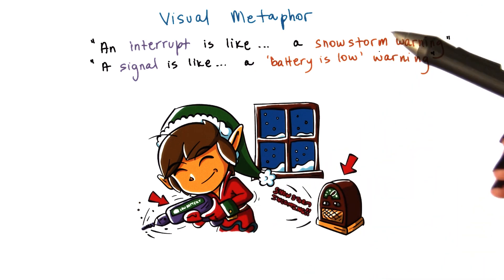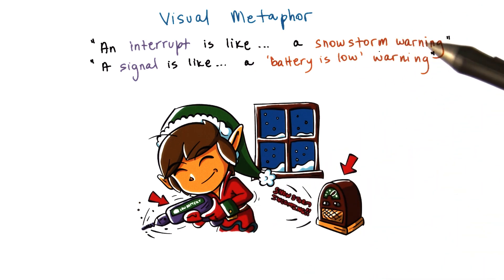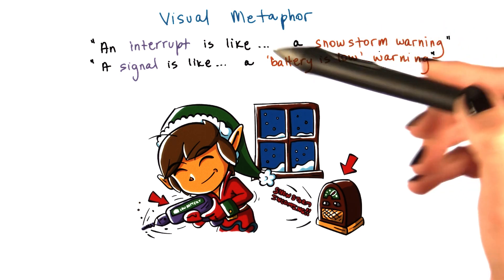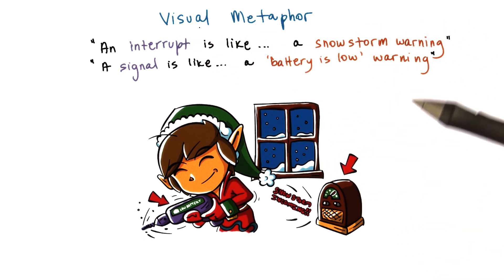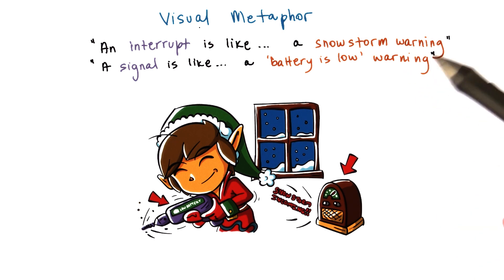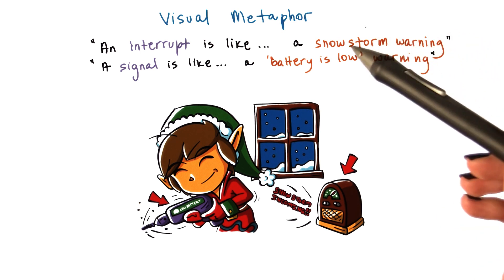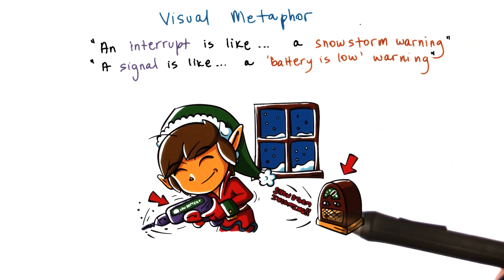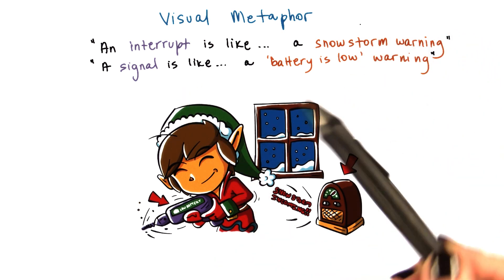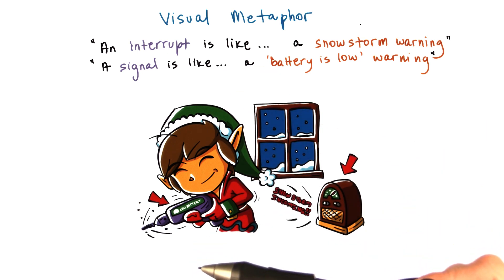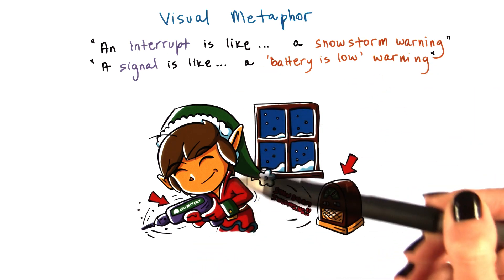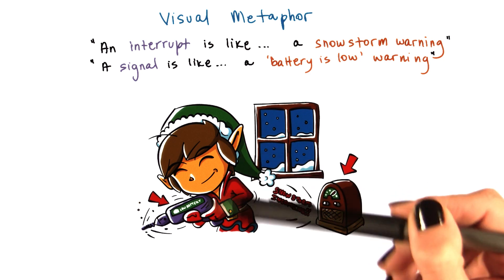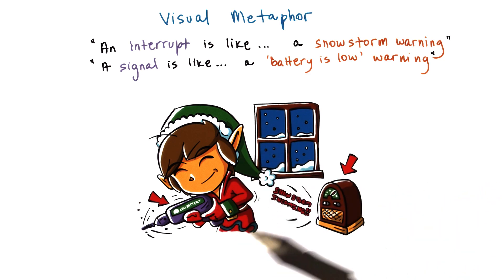The reason for these two choices is to make it a little bit more similar, with the interrupt being generated by an event that's external to the CPU — so an event that's external to the toy shop — whereas the signal is more generated from within, so the battery slow is directly caused by the toy shop worker fixing a toy.